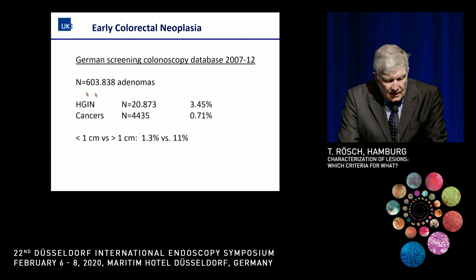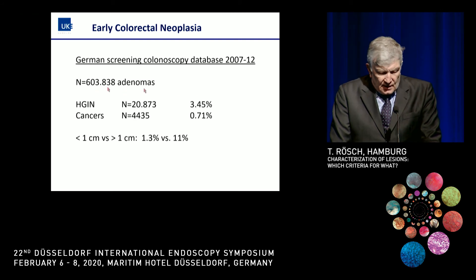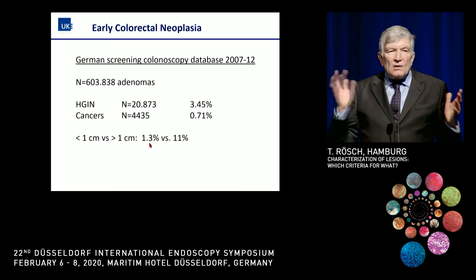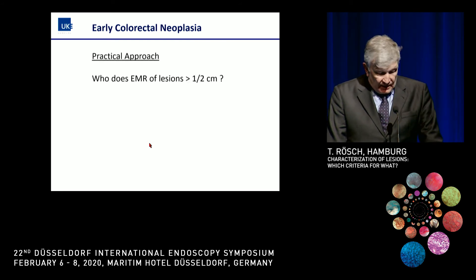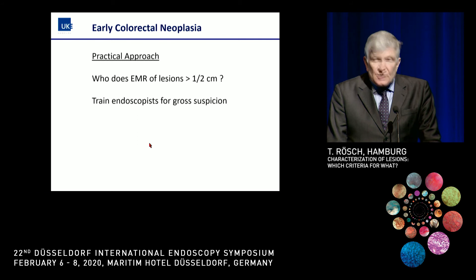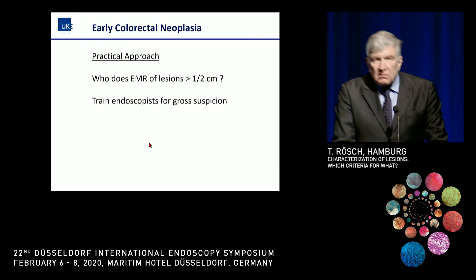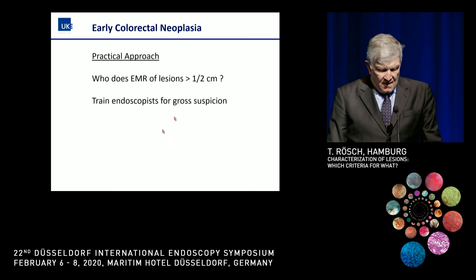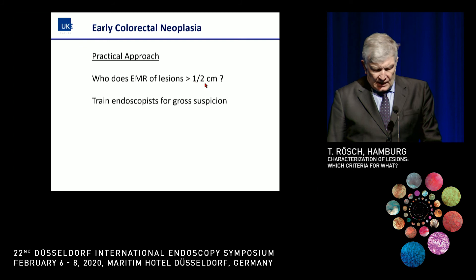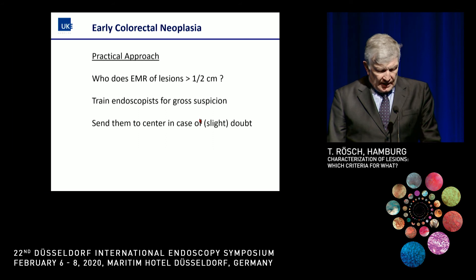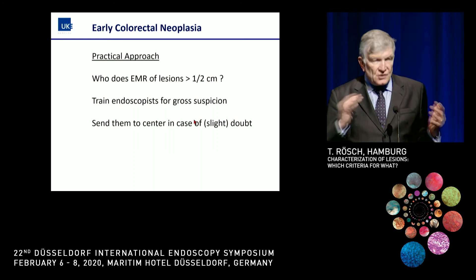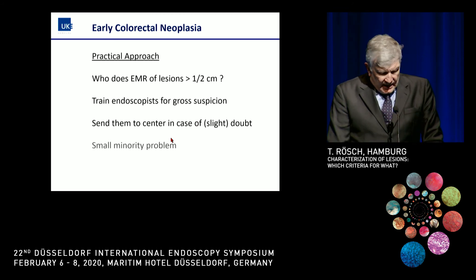This is a small-number problem. The German colonoscopy database with many adenomas over many years shows rates of high-grade lesions and cancers that are size-dependent. So maybe the only practical thing is to use size: above a certain size limit, experts or specialized centers have to deal with the lesion. The practical approach could be: larger than one centimeter, most endoscopists manage it; larger than two centimeters, train for gross suspicion and send them to a center.